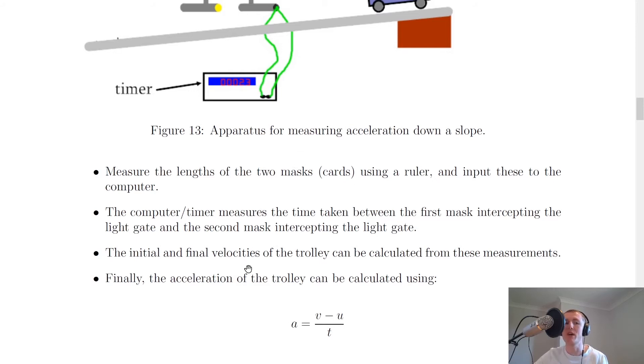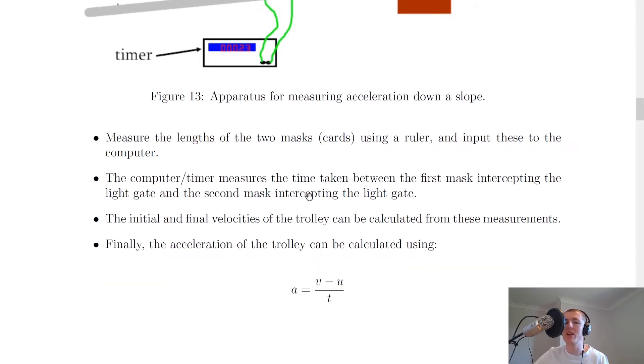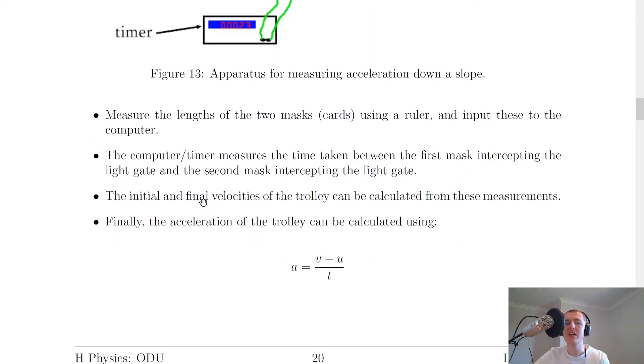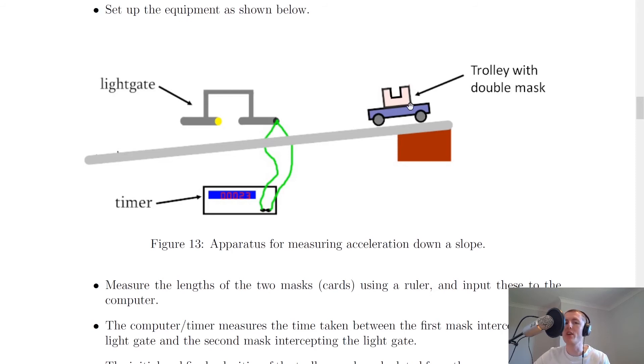The computer timer then measures the time taken between the first mask intercepting the light gate and the second mask intercepting the light gate. Then it says that the initial and final velocities of the trolley can be calculated from these measurements. So what happens is when you let the trolley go down the ramp, the timer measures how much time it takes this front mask to pass through the whole light gate.